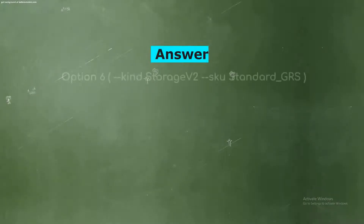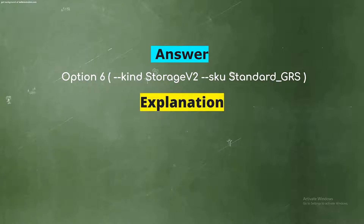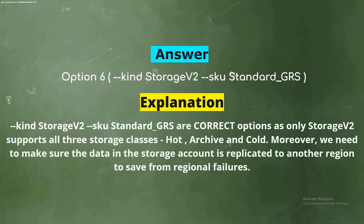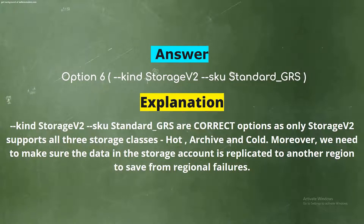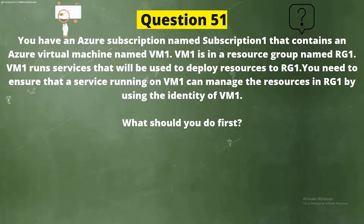The correct answer is Option 6, Kind Storage V2, SKU Standard GRS. Explanation: Kind Storage V2, SKU Standard GRS are correct options, as only Storage V2 supports all storage classes — hot, archive, and cool. Moreover, we need to ensure the data in the storage account is replicated to another region to protect from regional failures.